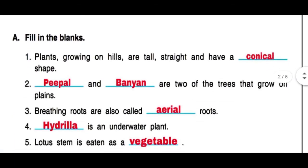First: plants growing on hills are tall, straight and have a conical shape. Second: Peepal and Banyan are two of the trees that grow on plains. Other trees that grow on plains can also be known as mango, neem, etc.